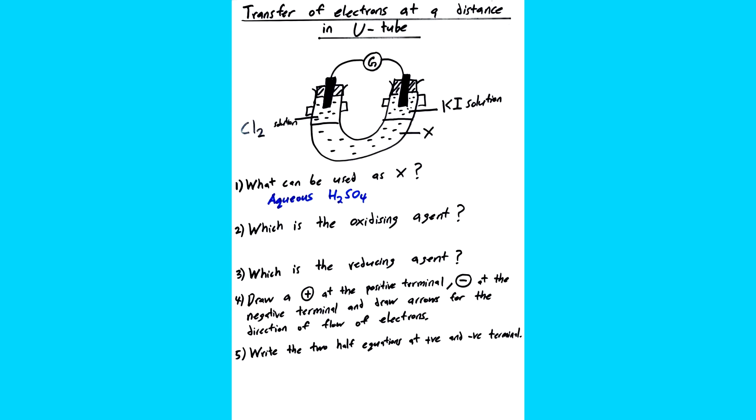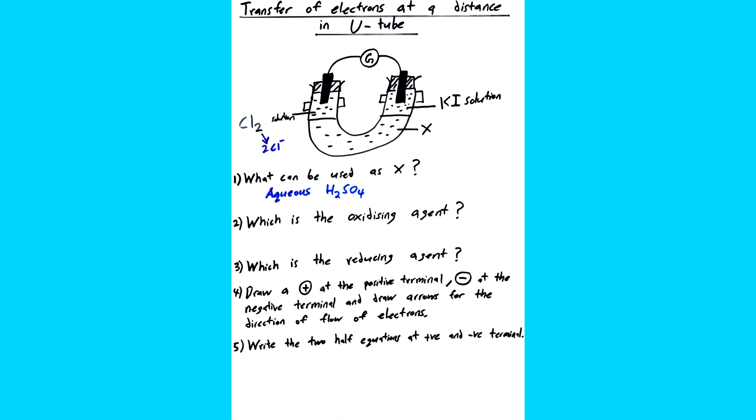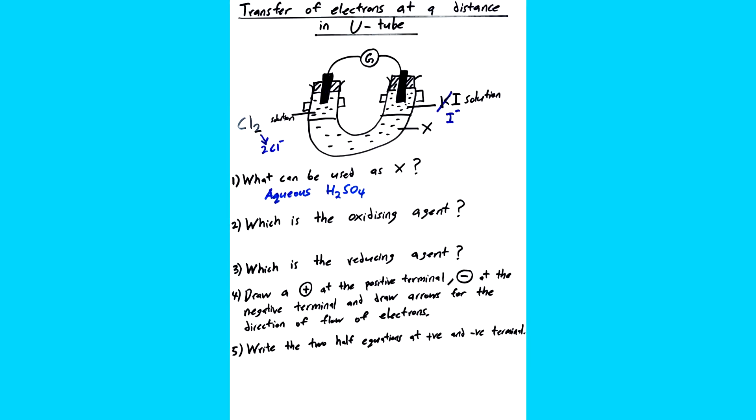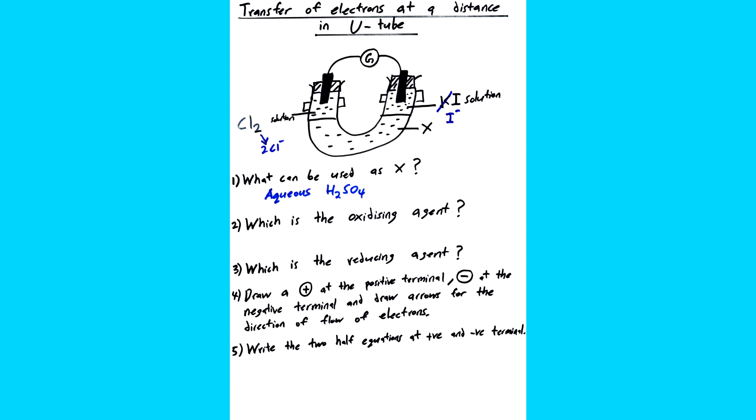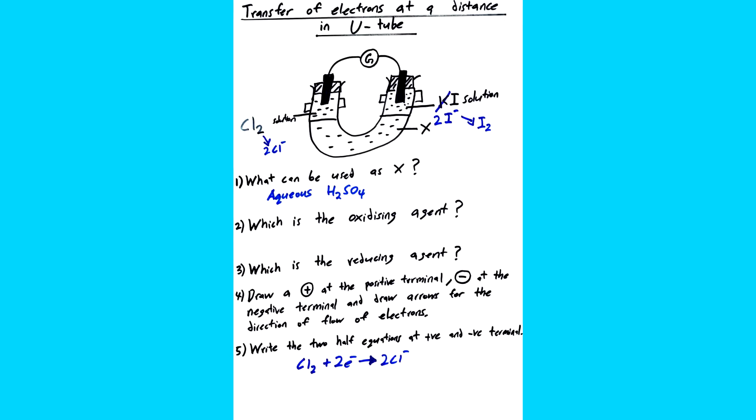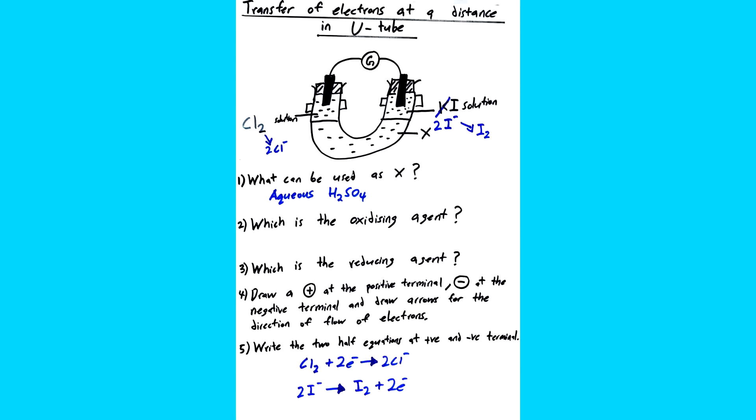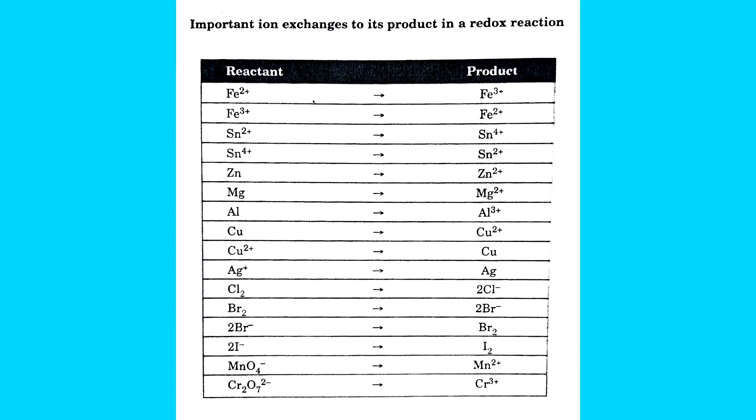So firstly, we have chlorine. So when I look at chlorine, I automatically know that the product will be Cl minus. And then Ki solution, you can just cut the K because no one really cares about the K. We are only focusing on the I minus. And when I looked at I minus, I know straight away that it will be I2 molecule. So using these two information, now I can quickly write the half equation which is Cl2 plus 2E becomes 2Cl minus and 2I minus becomes I2 plus 2E.